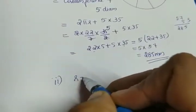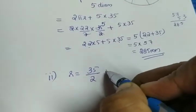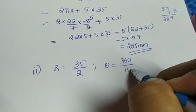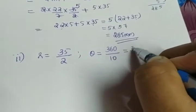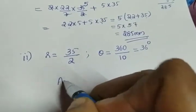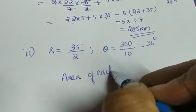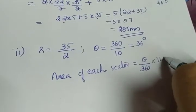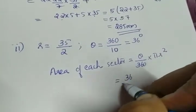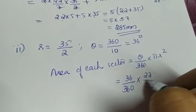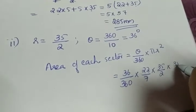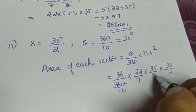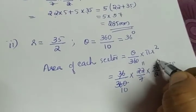Radius is 35/2 and theta is 36°, obtained from 360 ÷ 10. Area of each sector equals (θ/360) × πr² = (36/360) × (22/7) × (35/2) × (35/2). Here 36 and 360 cancel giving 1/10, 2 cancels giving 11, and 7 cancels giving 5.